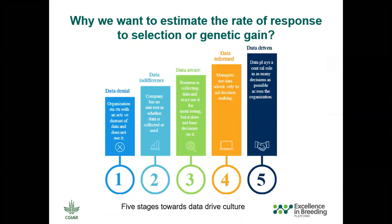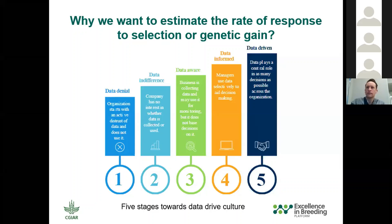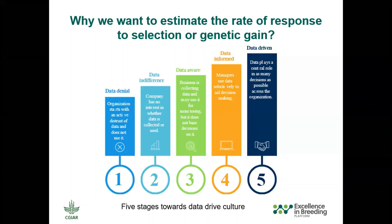But first, why do we want to estimate genetic gain? The CG and NARS programs and many other organizations are moving towards a more data-driven culture, where decisions are not taken anymore based on gut feeling. Decisions that can affect the sustainability and development of the organizations need to be based on facts — and good data is a good way to infer those facts. This image in the background shows five stages towards a data-driven culture, where most organizations are only in the first three: either denying the power of data or having the data but not using it for driving decisions.